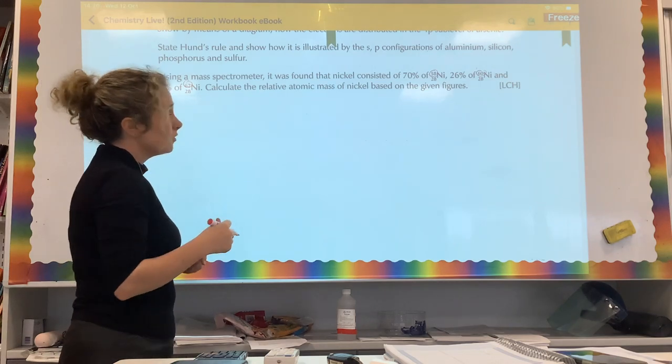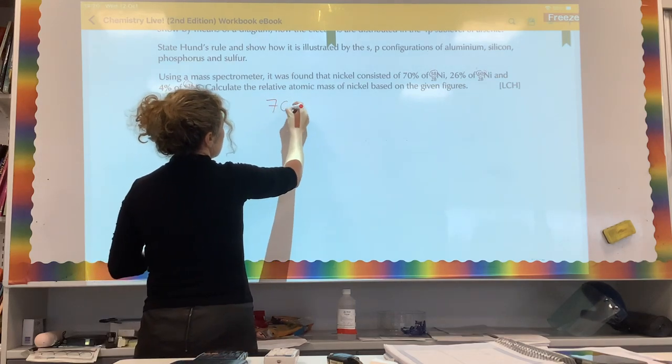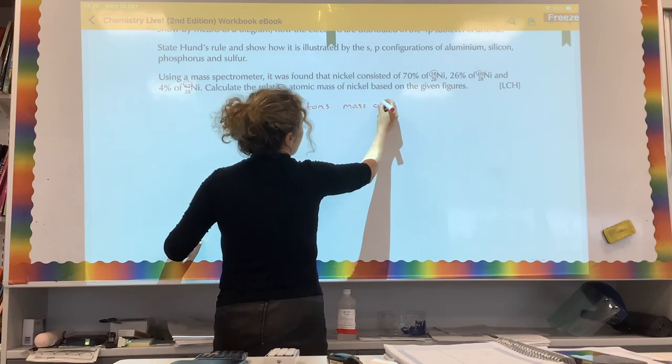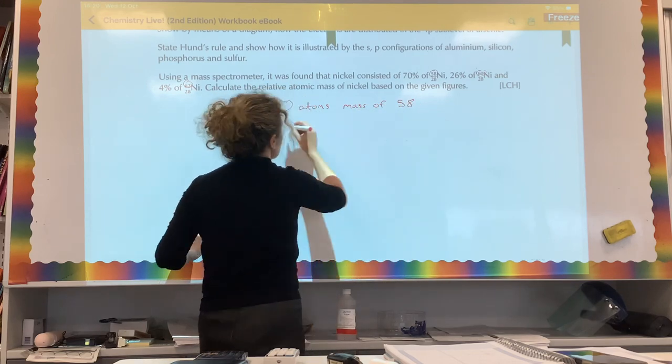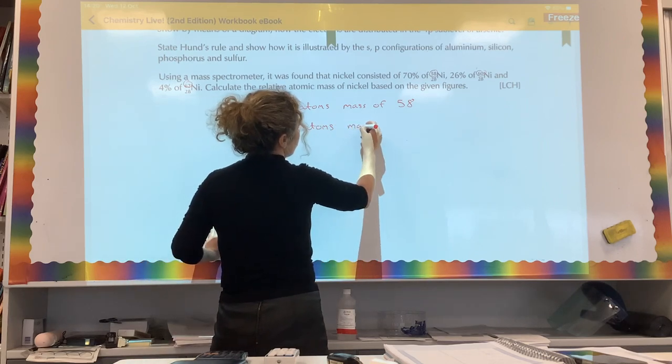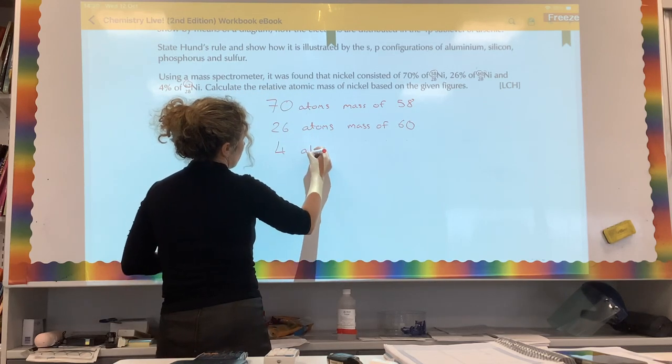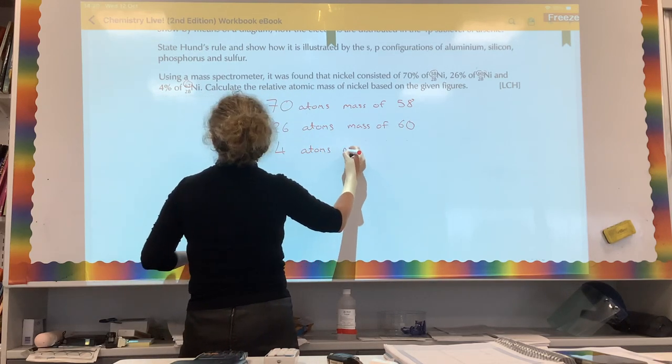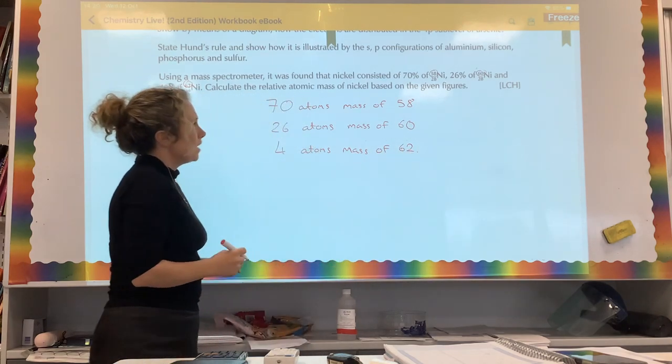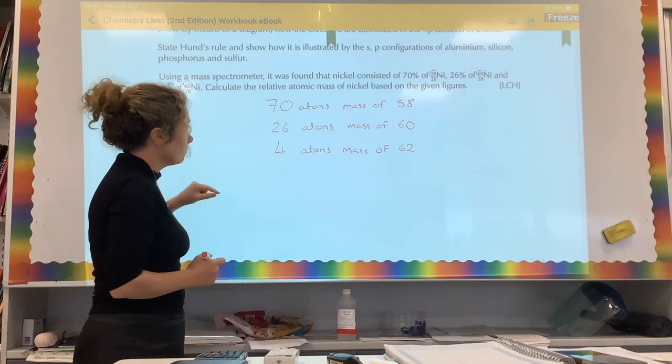So first of all, we've imagined we've got 100 atoms of nickel. So we've got 70 atoms with a mass of 58, we have 26 atoms with a mass of 60, and we have 4 atoms with a mass of 62. So we have to get the weighted average of these atoms, and the way we do that is the following.